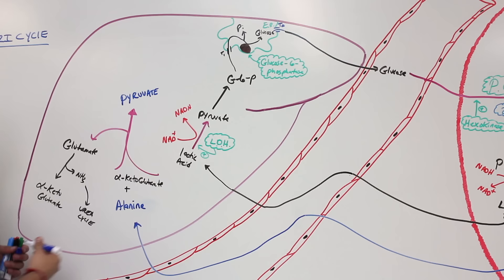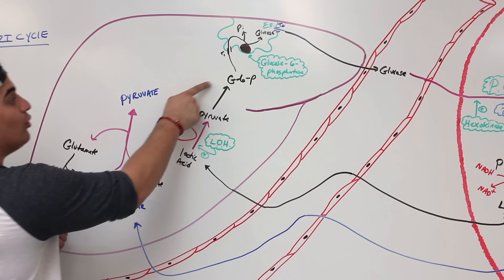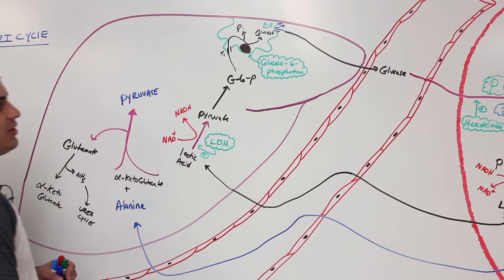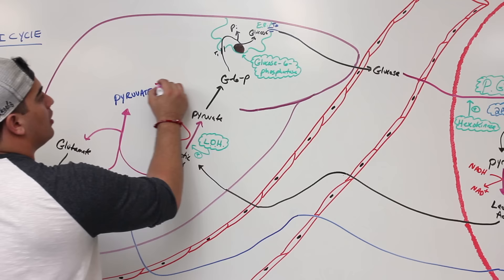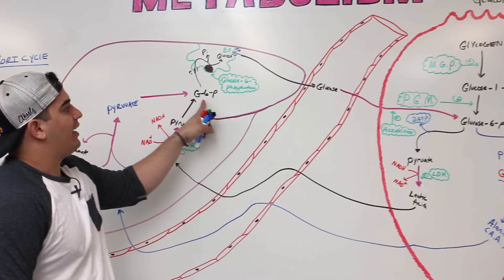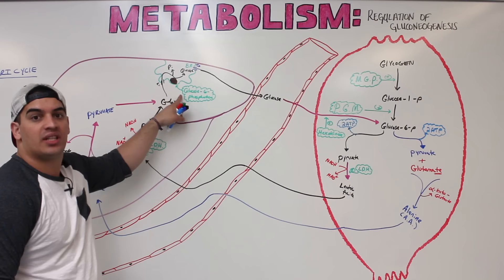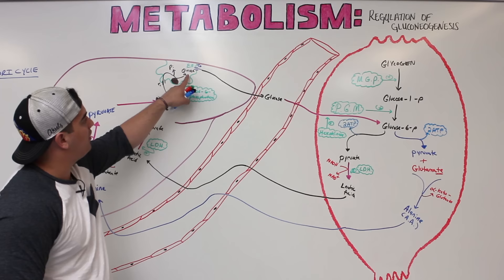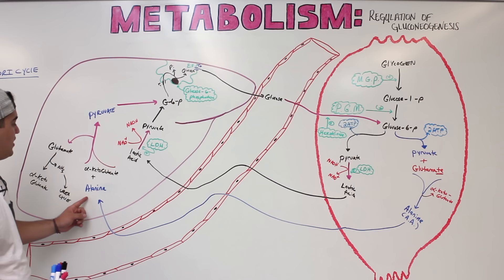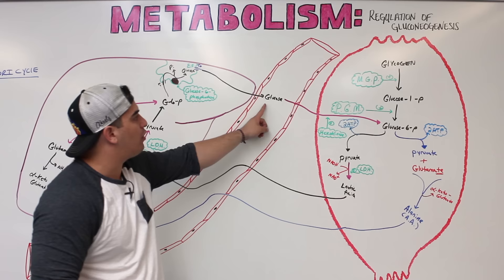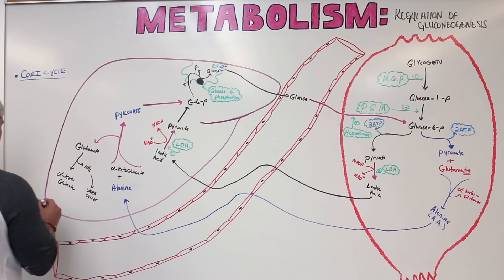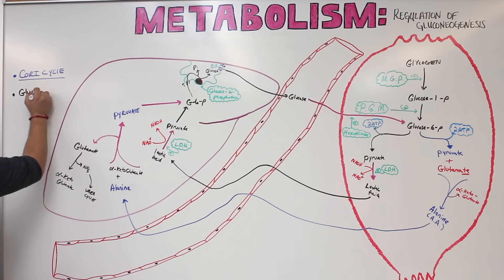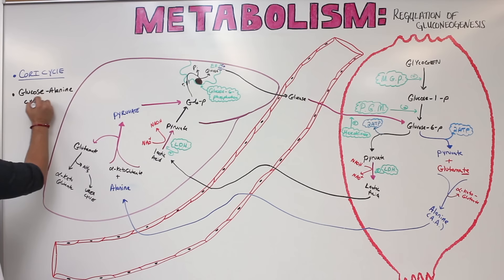That pyruvate can be converted into glucose-6-phosphate, and glucose-6-phosphatase can then convert it into free glucose, which goes into the bloodstream and can be taken back to the muscle to complete the cycle. This cycle, where glucose goes from muscle to liver as alanine and comes back out as glucose, is called the glucose-alanine cycle.